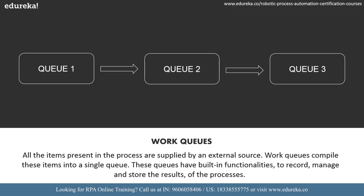Finally, work queues — a process in Blue Prism aims to automate repetitive tasks where all the items present in the process are supplied by an external source. Work queues compile these items in a single queue, and these queues have built-in functionalities to record, manage, and store the results of the processes. A work queue is essentially a sorted list of items executed by the process.